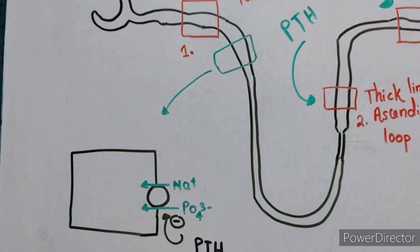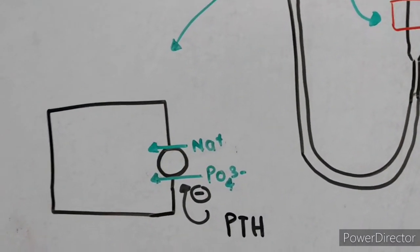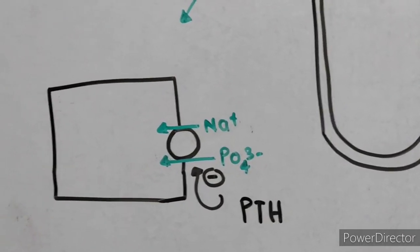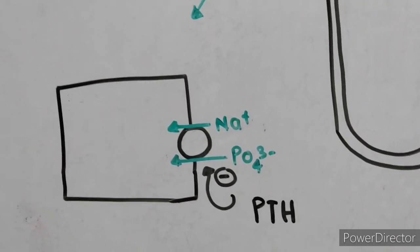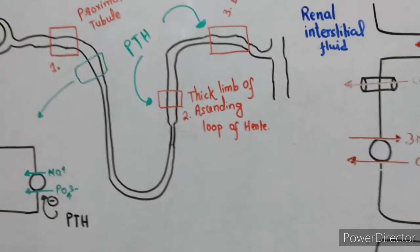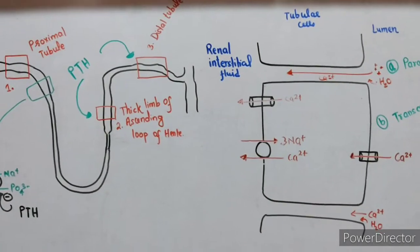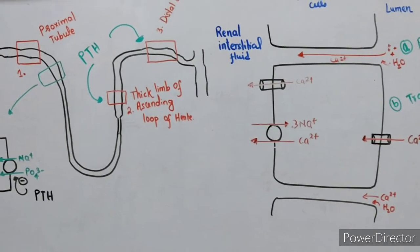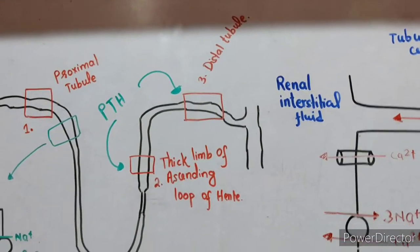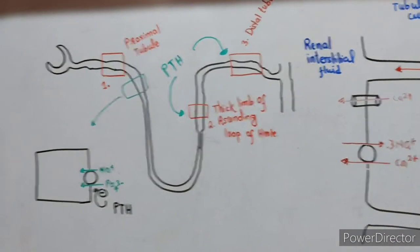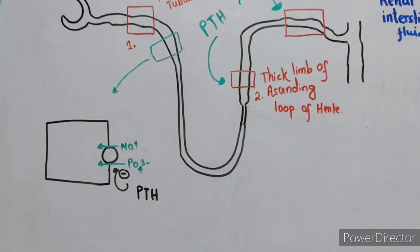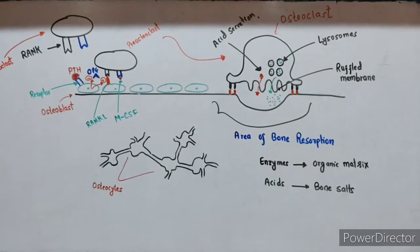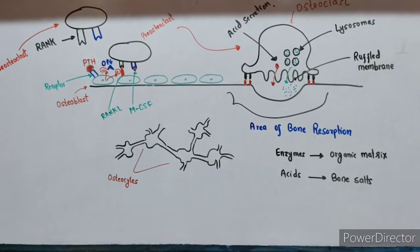Regarding phosphate reabsorption: in the proximal tubule, there is a sodium-inorganic phosphate cotransporter on the luminal membrane. Parathyroid hormone inhibits this cotransporter and decreases phosphate reabsorption from the proximal tubular cell. In summary, in the kidney, parathyroid hormone increases calcium reabsorption by acting on the thick limb of the ascending loop of Henle and the distal tubule, and decreases phosphate reabsorption by acting on the proximal tubule.